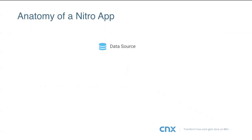Now I'll briefly describe the anatomy of a Nitro app to give you context for the demo. The first thing we start with is a data source. I'm not talking about creating a DDS or SQL table — we assume that's done already. We're talking about going into the Nitro app builder and hooking up to your data: specifying a file, or putting together an SQL statement combining and sorting things.